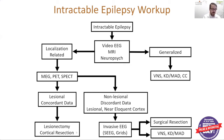If this initial workup determines that your epilepsy is more non-lesional, or the data does not all point to the same area, or perhaps it's lesional but near an area of the brain that performs a vital function, sometimes we'll have to proceed with more invasive EEG evaluations such as stereo EEG or grid placement. Through that evaluation, we'd determine whether to proceed with surgical resection, or fall back with vagal nerve stimulation, ketogenic diet, modified Atkins diet, or even CBD oil in some cases.